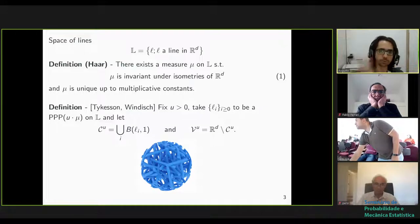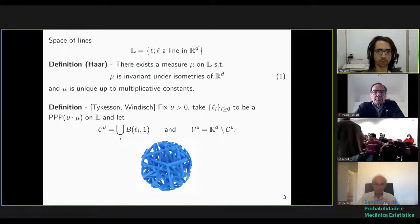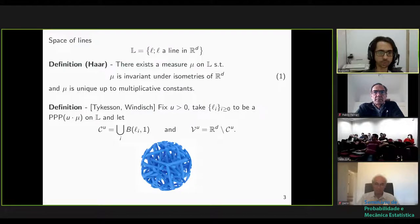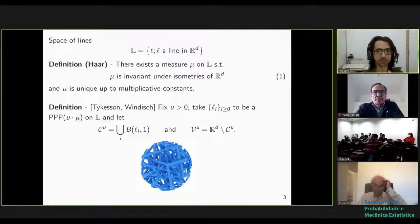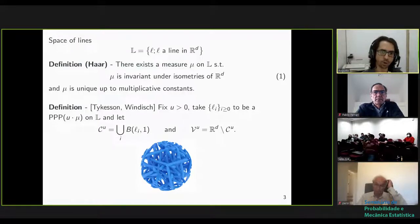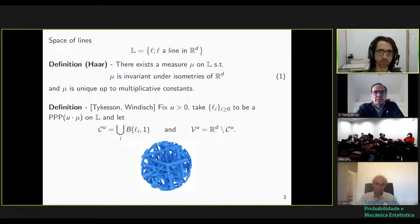So you have several points in the space of lines, and for each of these lines, you put it in R^d - a soup of lines. We're talking about cylinders here. We define C_u to be the union of all the cylinders, where the axis is given by one of these lines in the Poisson process and the radius is 1. And V_u is the vacant set for the cylinders - it's just the complement. What we see here is a ball of radius roughly 30 intersected with the cylinders C_u.